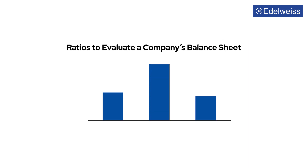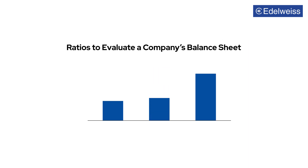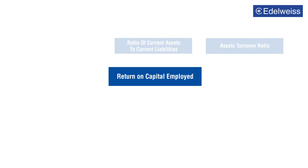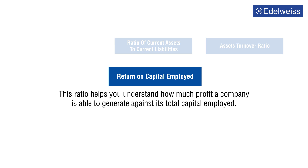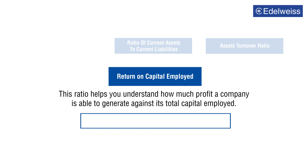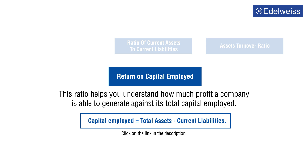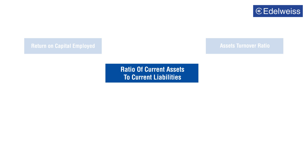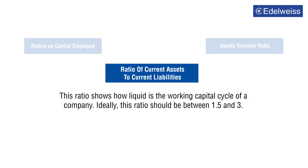There are certain ratios that can help you while evaluating a company's balance sheet before investing in it. Return on capital employed (ROCE): this ratio helps you understand how much profit a company is able to generate against its total capital employed. Here, capital employed is calculated as total assets minus current liabilities. To understand ROCE in detail, click on the link in the description.